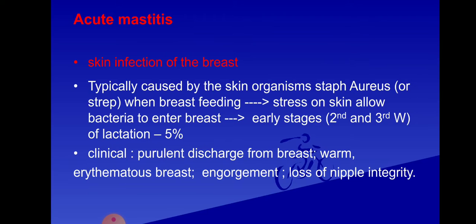The second category is acute mastitis — inflammation of the breast tissue and skin. It is most commonly seen in lactating women, occurring in 90 to 95 percent of cases during lactation, mainly in the first month. During the initial stage of lactation, increased stress on the skin surface causes cracks, which allow bacteria normally present on the skin — such as Staphylococcus aureus — to enter the breast. Bacteria enter through cracks and fissures on the nipple surface during the second and third week of lactation.